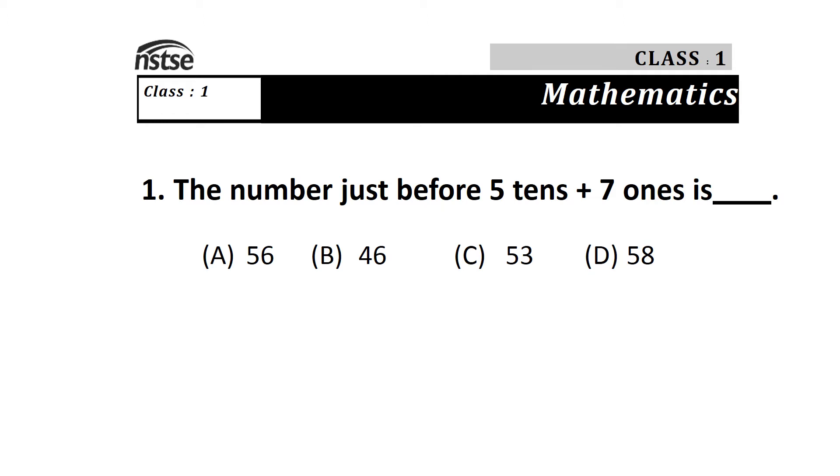Question 1: The number just before 5 tens plus 7 ones is? Options are A) 56, B) 46, C) 53, and D) 58. First we solve this equation: 5 tens means 50 plus 7 ones means 7, so 50 plus 7 equals 57. The number just before 57 is 56, so the answer is A.